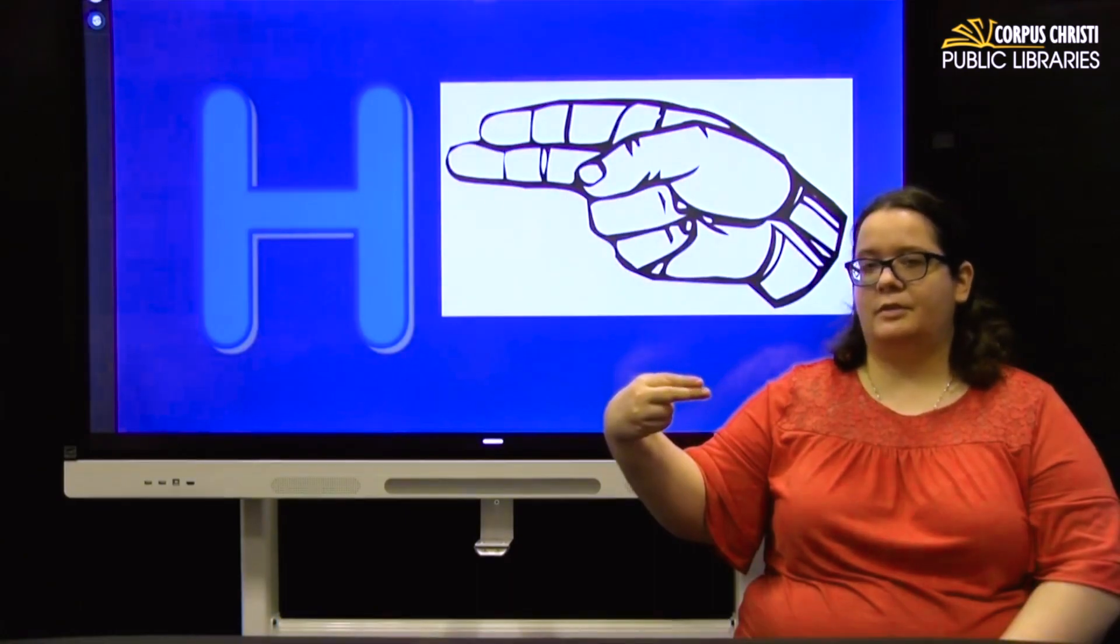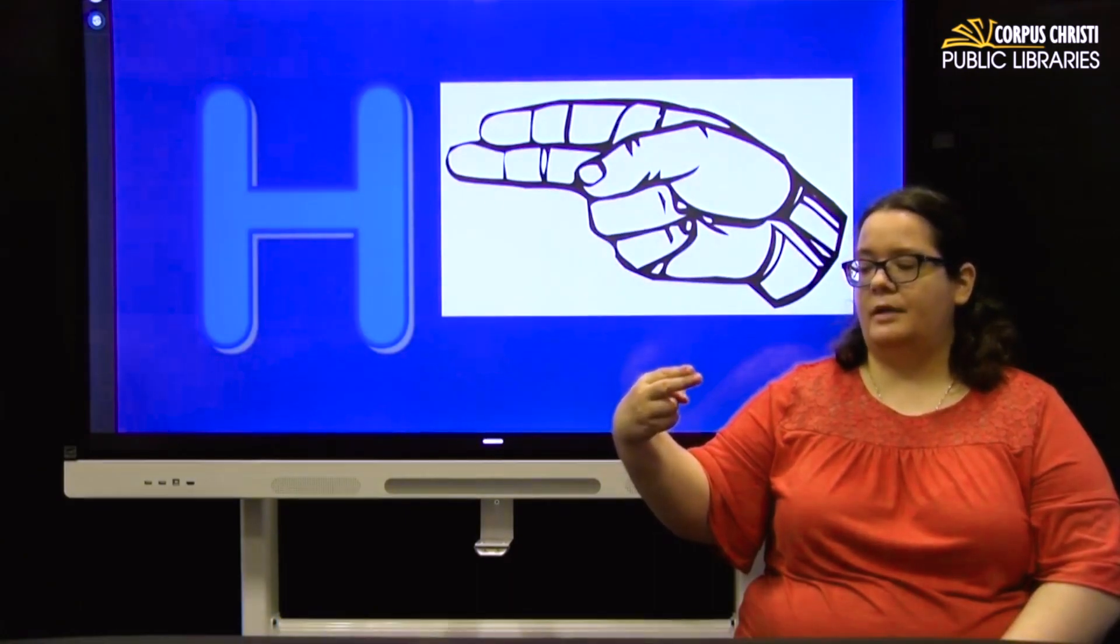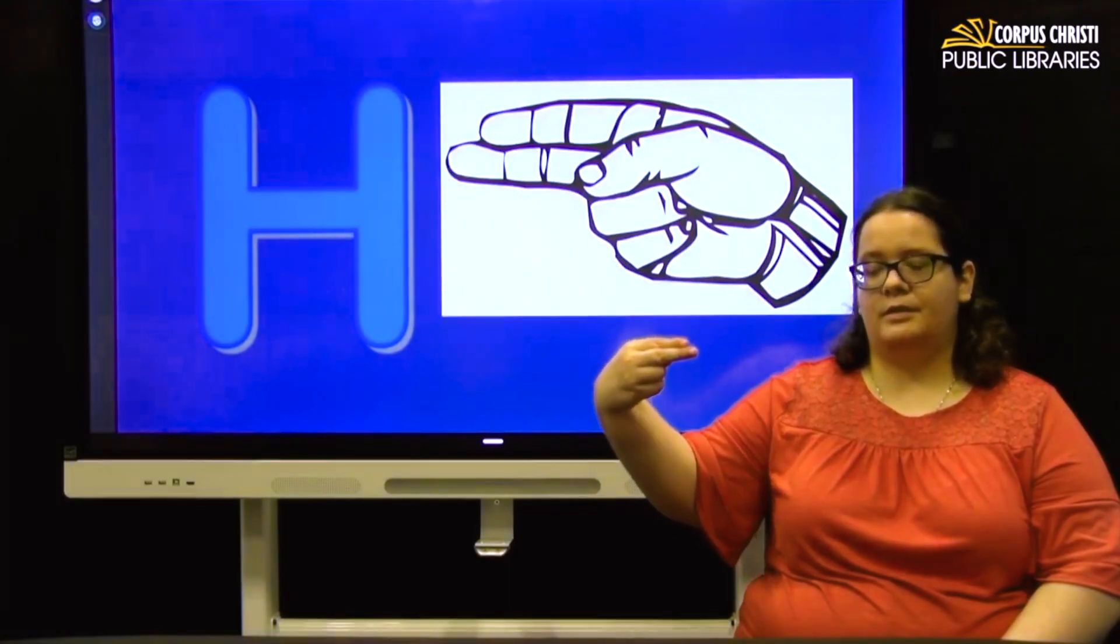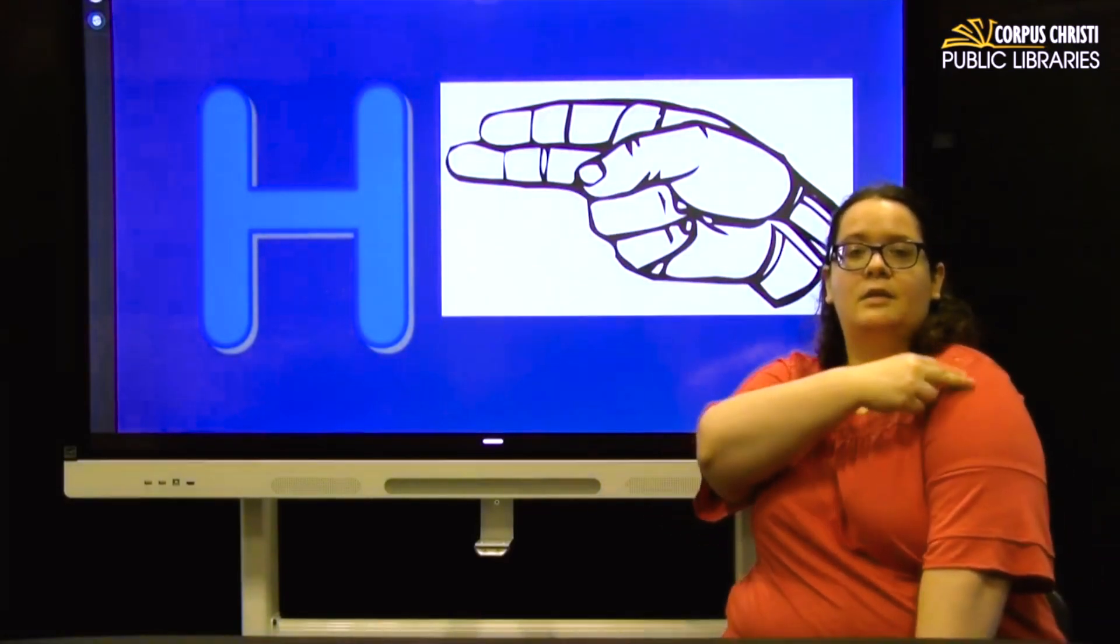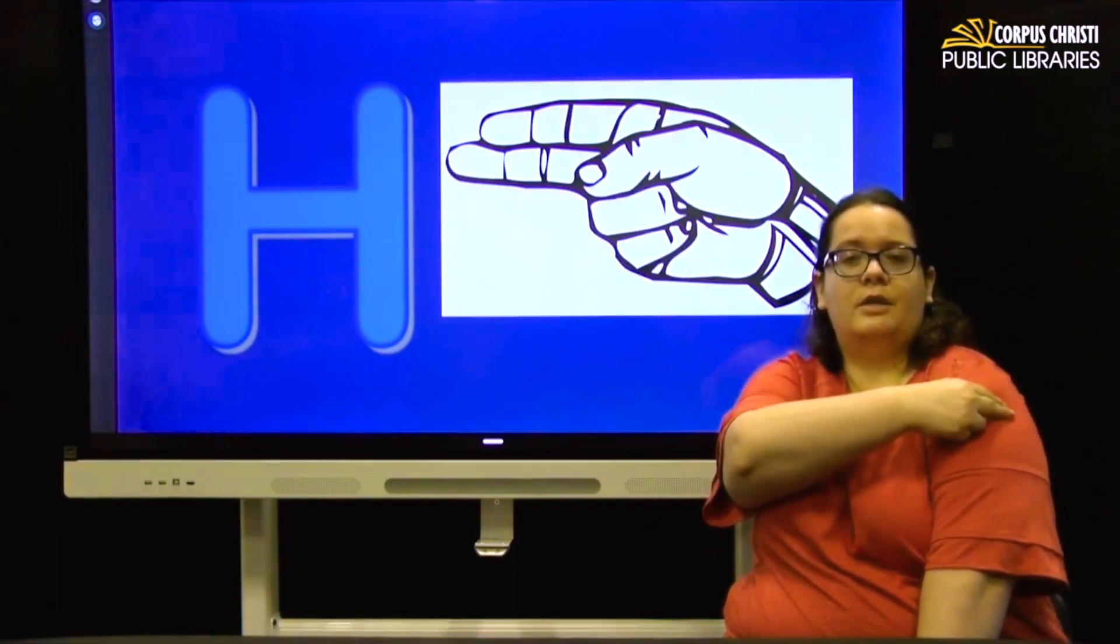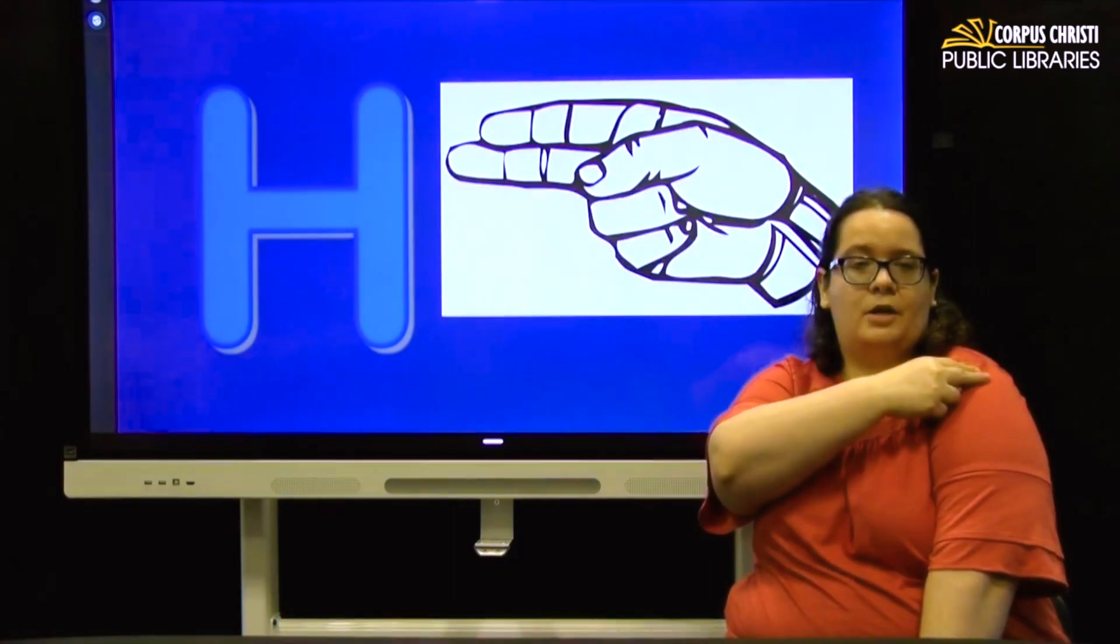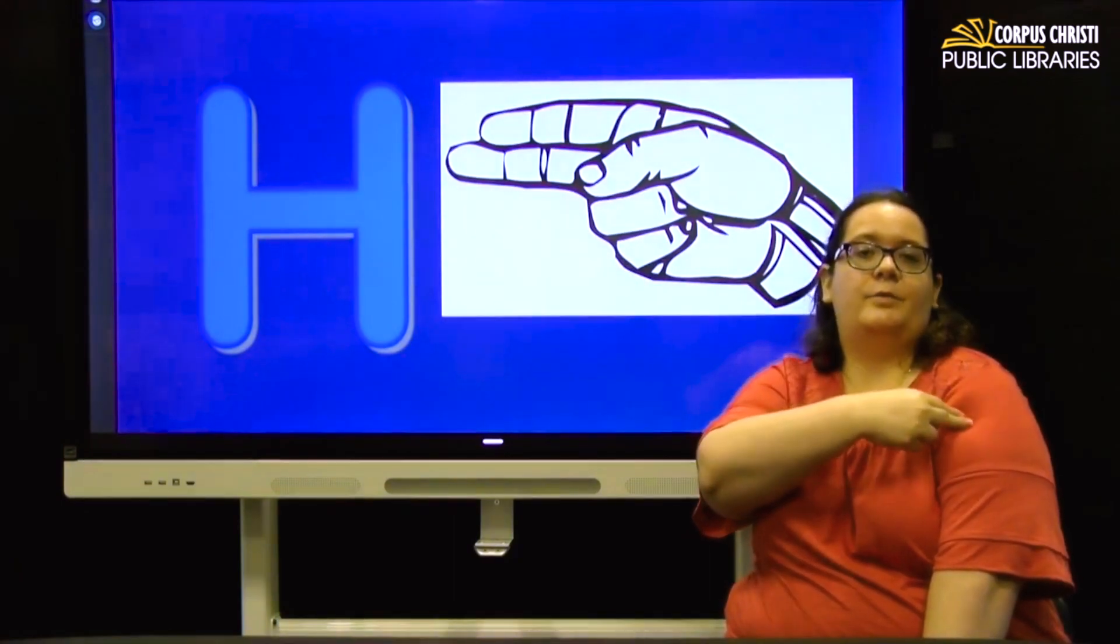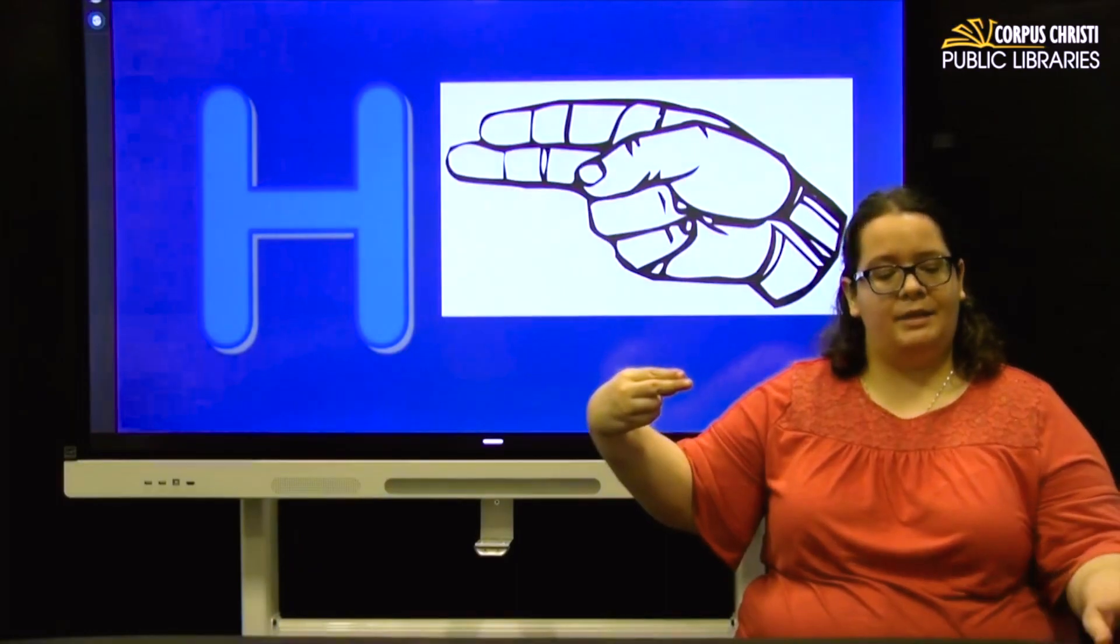H. We're just going to bring our middle finger out and let your thumb rest on your ring finger. So H. You can use for sign like hospital. You're going to draw a cross on your shoulder or your upper arm. And think of the red cross to remember that one. So H.